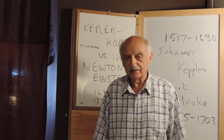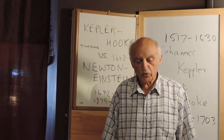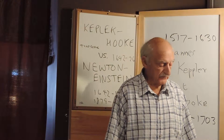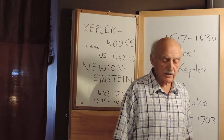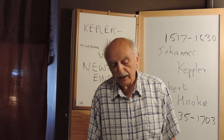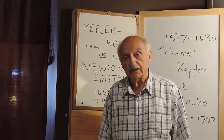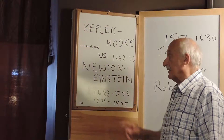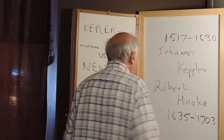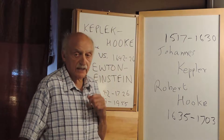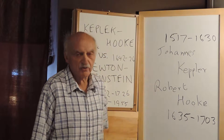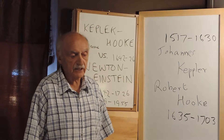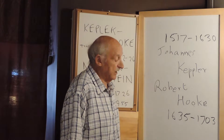I'm going to talk today about four scientists who, in pairs, had different views of gravity from one another, mainly because they lived at different times, and in a sense they compete with one another because their views conflict. On my left I have Johannes Kepler, who was an assistant to a Danish astronomer, Tycho Brahe, who was Danish.